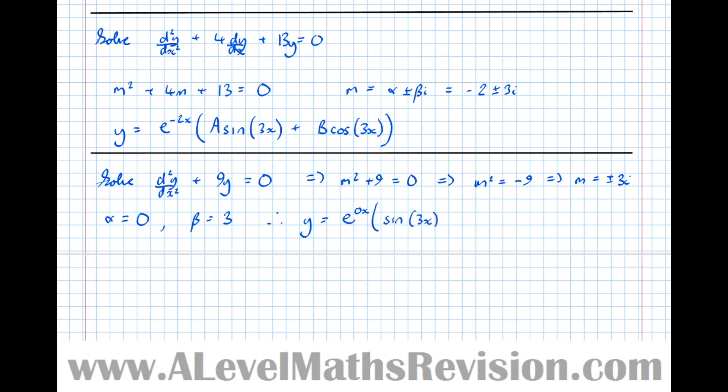Plus B cos(3x). And this constant at the front, e^0 is just 1, so we can get rid of that, 1 times that. So it just leaves that solution there. So we only have a trig part when the roots of the auxiliary equation are purely imaginary.